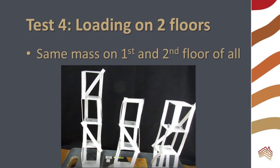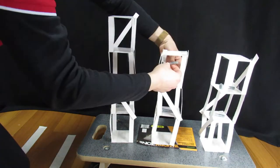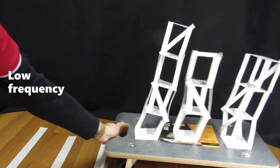Test four has additional masses on the second floor of the buildings. What happens when the buildings are heavily loaded?